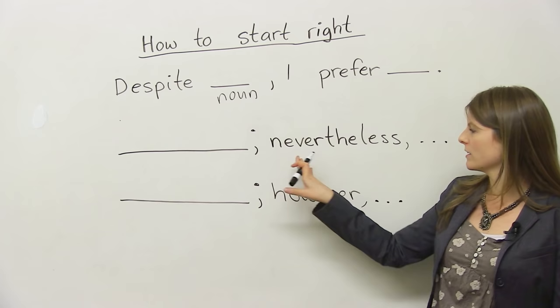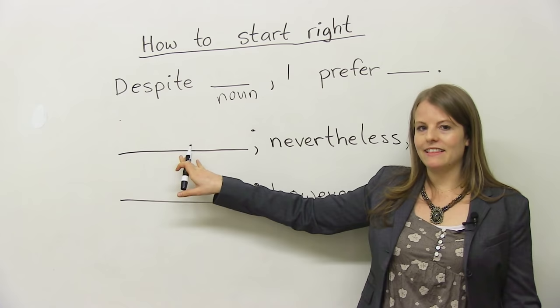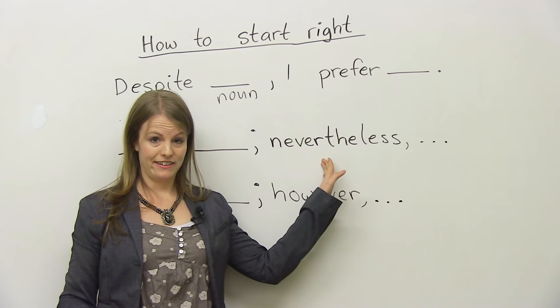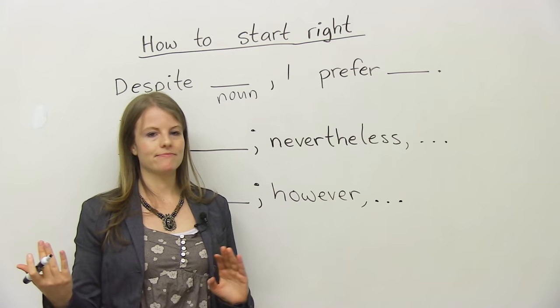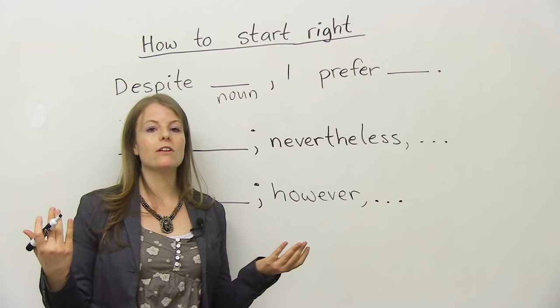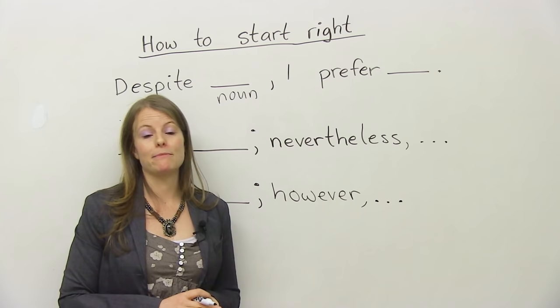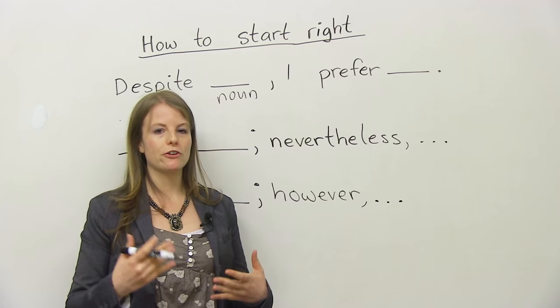Another way you can show the opposing opinion is with the word nevertheless. Some people like living in the city. Nevertheless, I like living in the countryside. Some people like playing computer games. Nevertheless, I like reading books. Some people love their politicians. Nevertheless, I find politicians are not always honest. So again, this is where you're giving the opposite view.